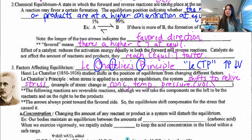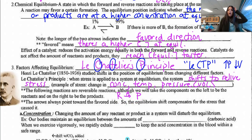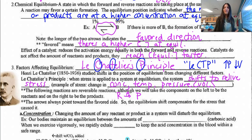The following reactions are reversible — we take components on the left to be reactants, on the right to be products, always. The arrow always points to the favored side, so the equilibrium shift compensates for the stress that caused it. The longer double arrow indicates the side being favored.